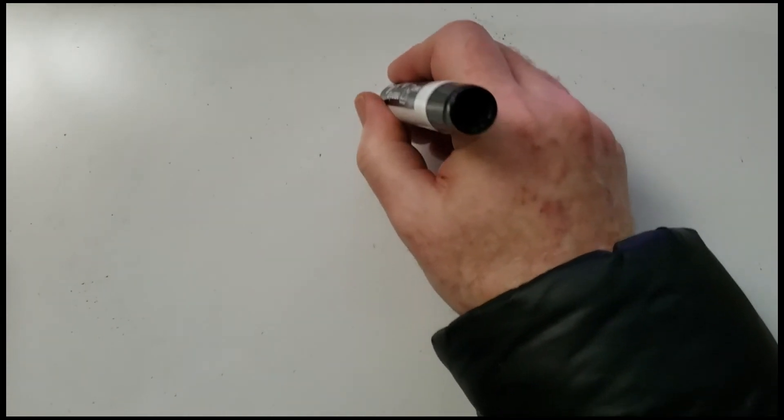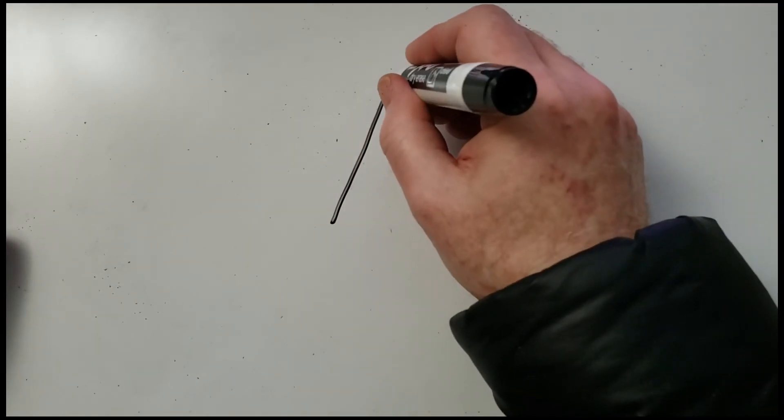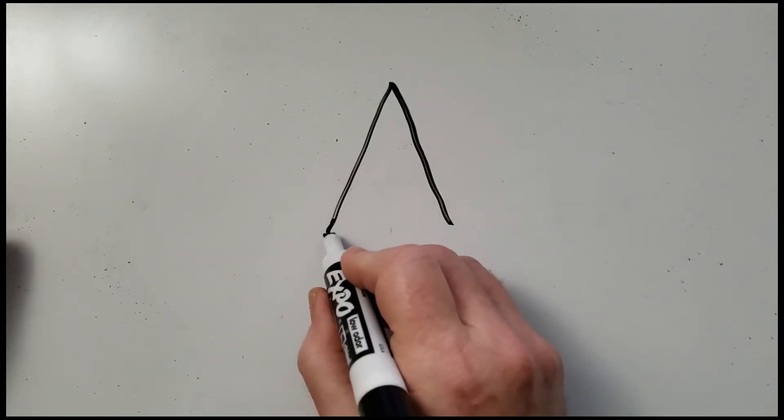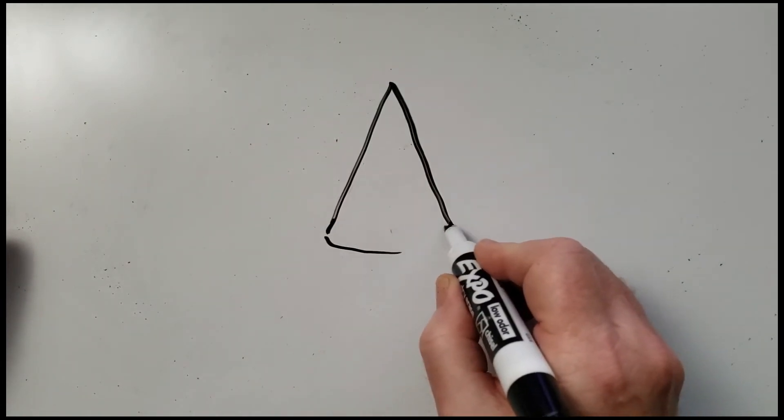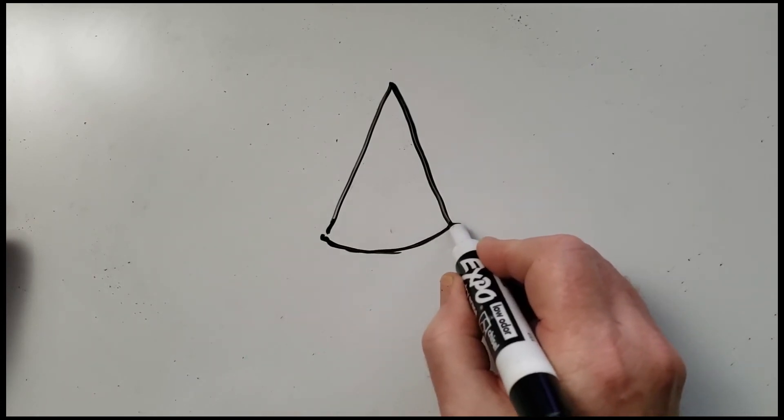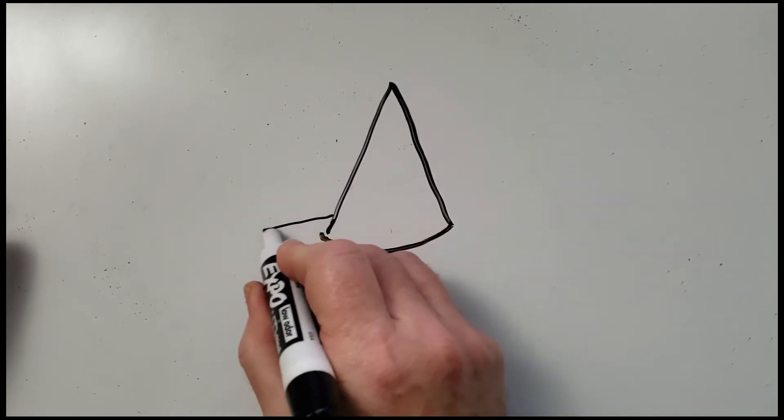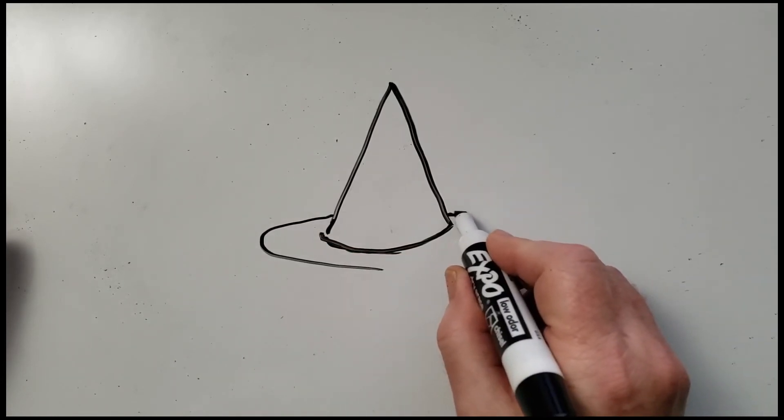And let us draw a simple witch's hat. A witch's hat is a cone. So we just start with an upside down letter V. When we join the bottom, we join the bottom with a smile. So we don't go straight across.